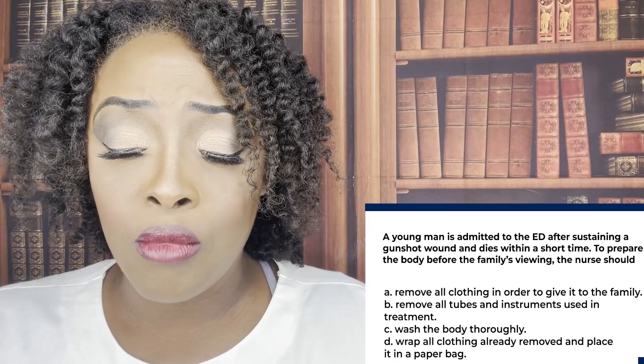A young man is admitted to the emergency department after sustaining a gunshot wound and dies within a short time. To prepare the body for the family's viewing, the nurse should: A, remove all clothing in order to give it to the family; B, remove all tubes and instruments used in treatment; C, wash the body thoroughly; or D, wrap all clothing already removed and place it in a paper bag.